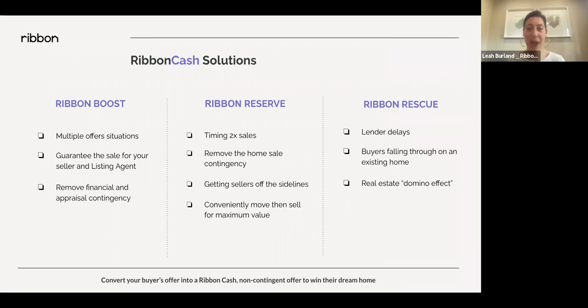Ribbon Rescue is not something we see a lot, but know that if your buyer suddenly can't close for another couple of months and the seller won't extend the close date, you can actually add Ribbon onto contracts that are already underway — so it's still a possibility to add Ribbon to something that didn't start with Ribbon.